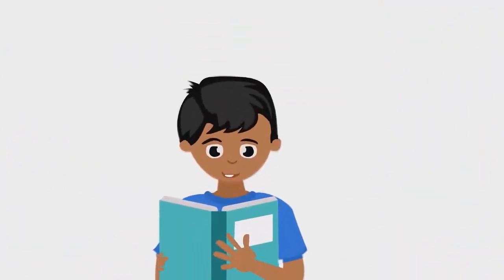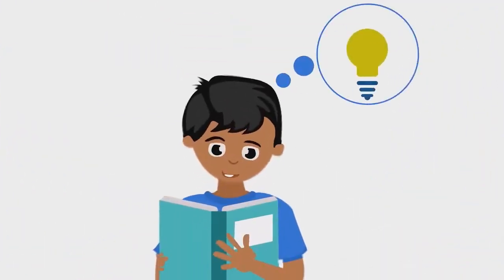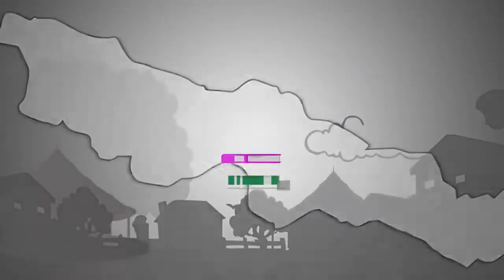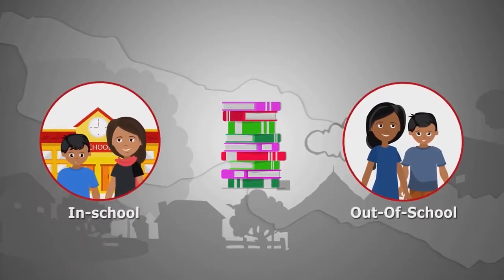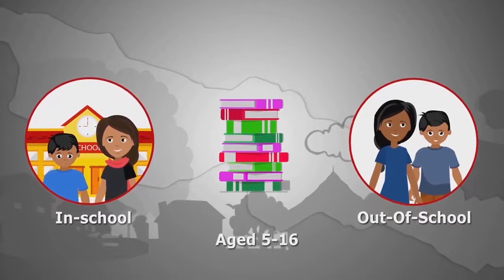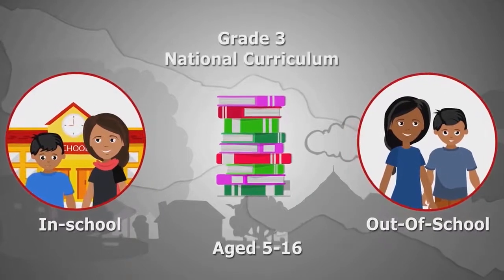The assessment in Province 2 was designed to determine the current learning level of in-school and out-of-school children aged 5 to 16 against the third-grade national curriculum.